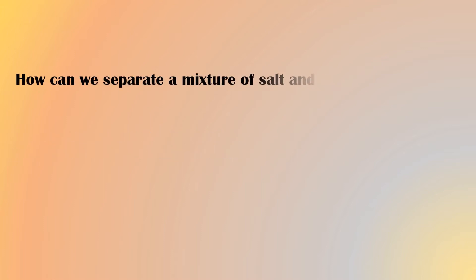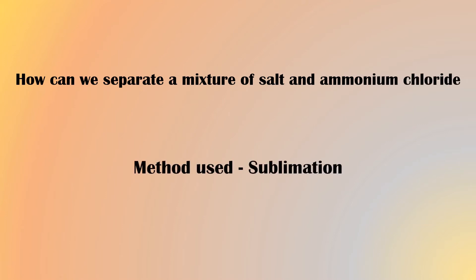Next, how can we separate a mixture of salt and ammonium chloride? The process used is sublimation. As we know, ammonium chloride can directly convert from solid to gas or gas to solid, so this technique is used. Let's see it with an experimental procedure.